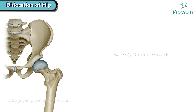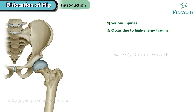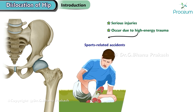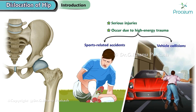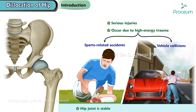Dislocation of hip. Introduction. Hip dislocations are serious injuries that often occur due to high-energy trauma, such as sports-related accidents or vehicle collisions. While the hip joint is generally stable, it takes a substantial impact to dislocate it.